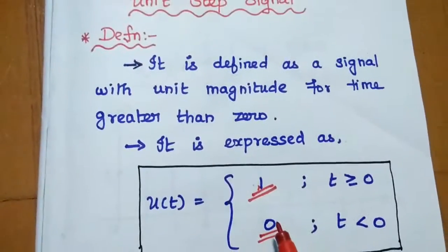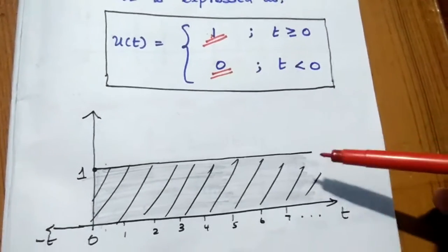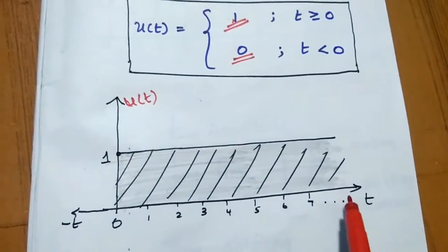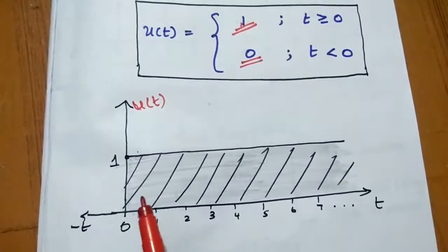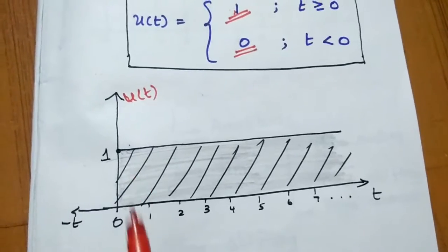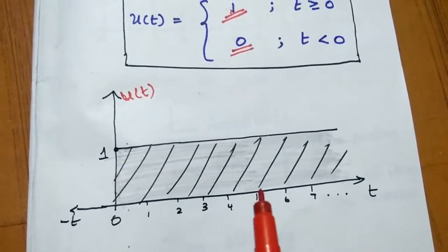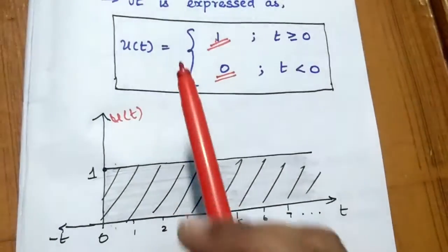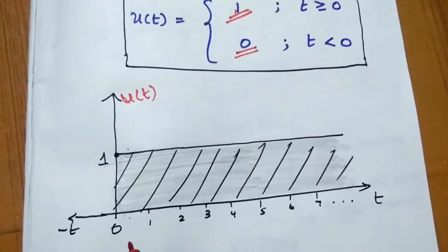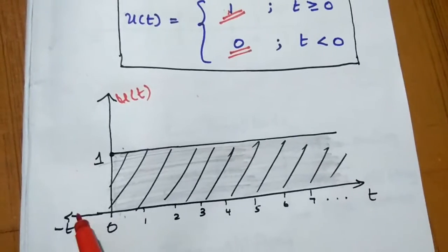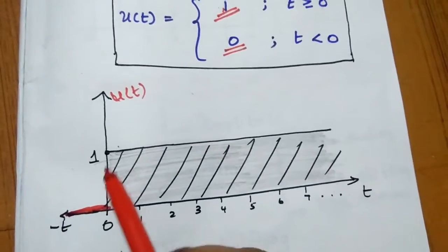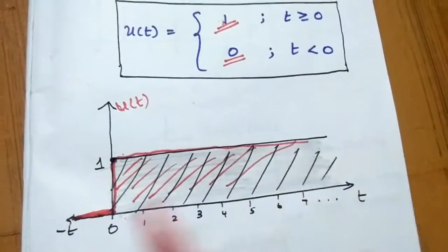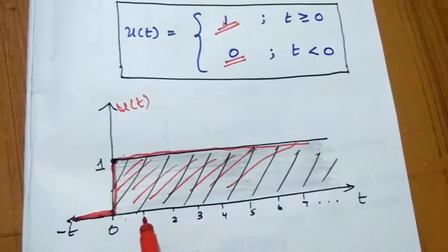This step signal can be drawn as shown. This is the representation of the step signal. The X axis represents time and the Y axis represents amplitude. U(T), the unit step signal, has a value of 1 whenever time is greater than or equal to 0, and 0 when less than 0. It looks like a step — that's why it's called a step signal.